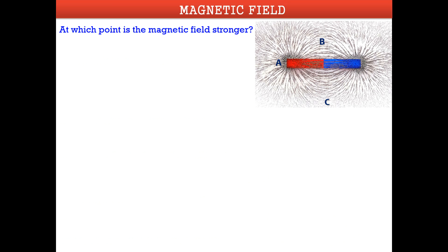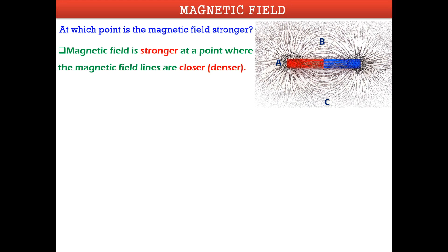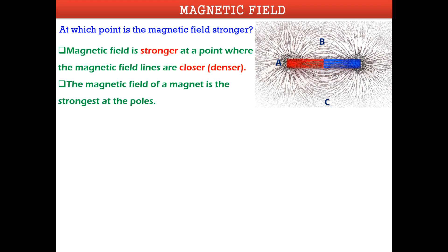At which point is the magnetic field strongest? The magnetic field is stronger where the magnetic field lines are closer or denser. The lines are closest and densest at the poles. When you move away from the poles, the field intensity decreases. Therefore, the magnetic field of a magnet is strongest at the poles.